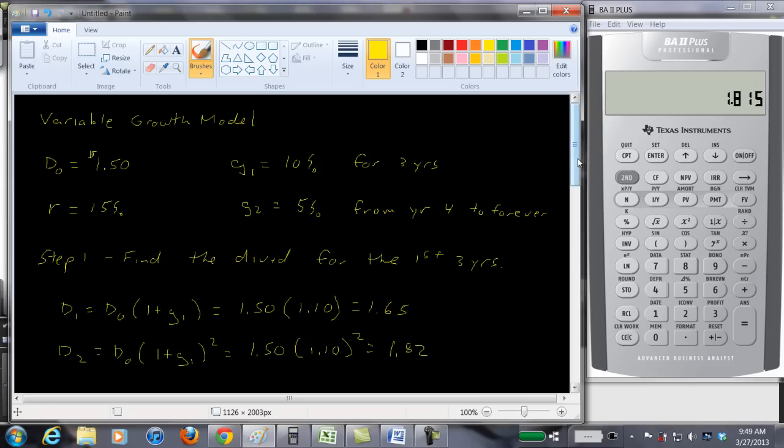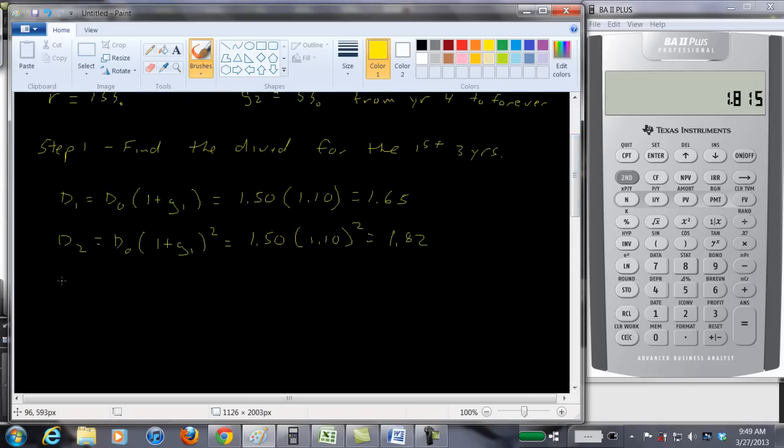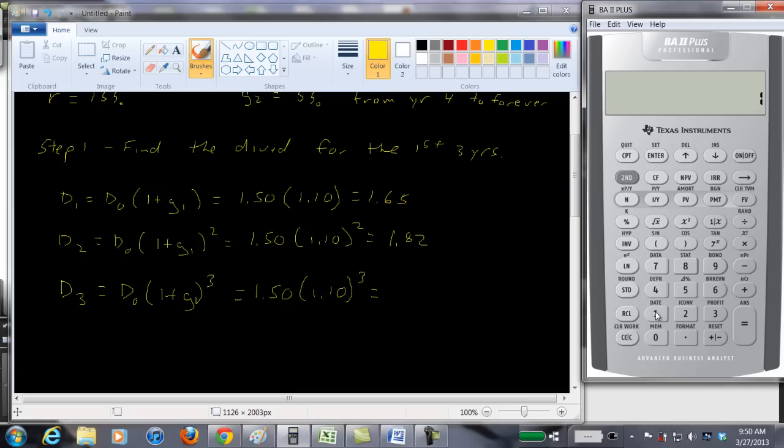And then in year three we have the dividend times 1 plus the growth rate G1 raised to the third power. So $1.50 times 1.10 cubed. And again we can take 1.1, hit the Y to the X key, it allows us to raise it to the power. So that's going to be 1.331 times $1.50 and we get 1.9965. So let's just round off to $2.00.